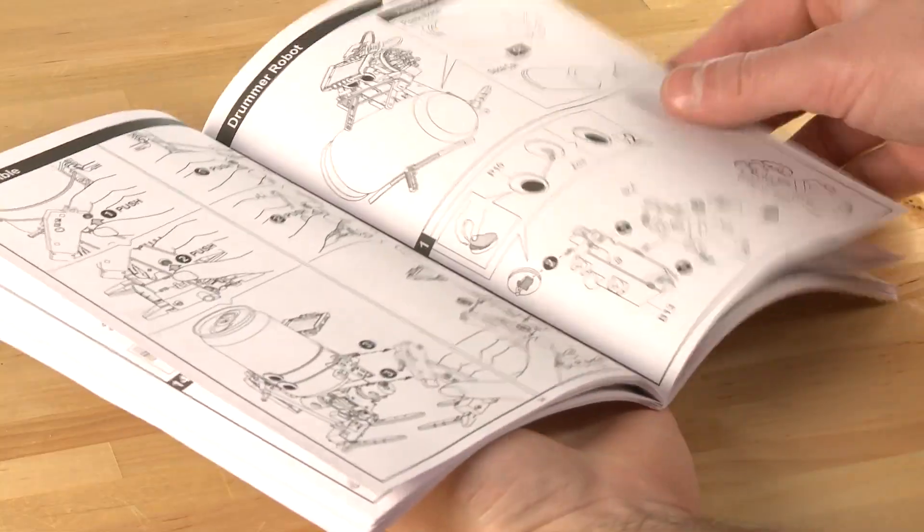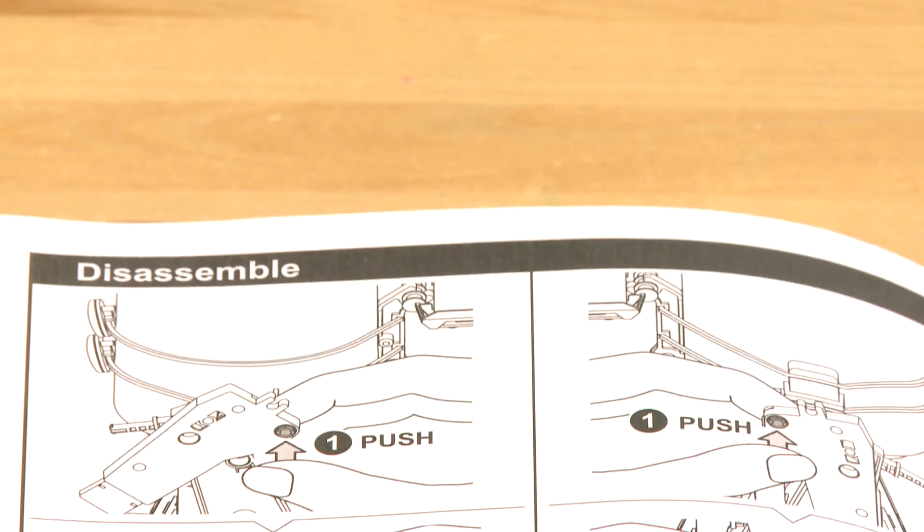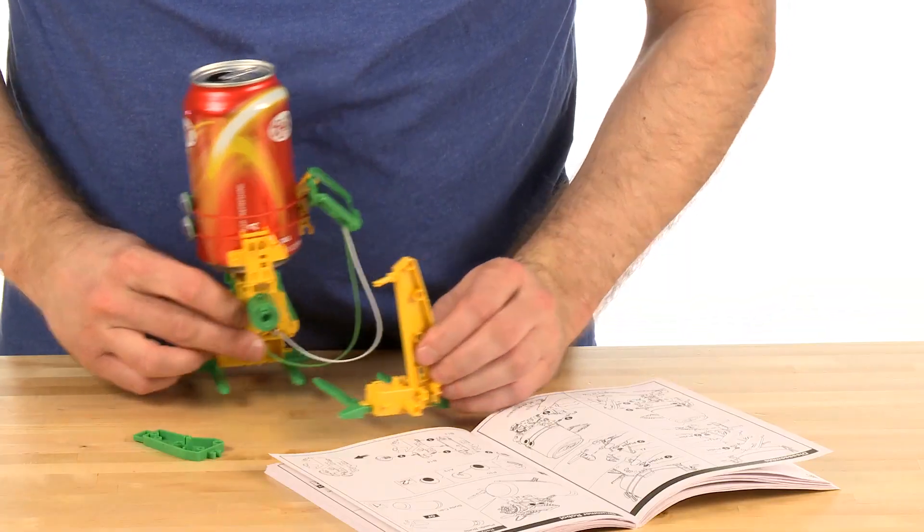The kit comes with an instruction manual that not only shows you how to assemble each robotic model, but also some tips on how to disassemble each unit as well.